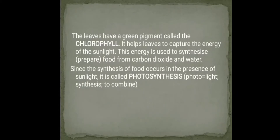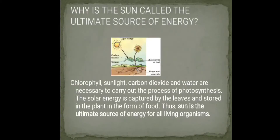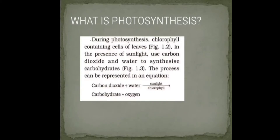This captured energy is used to synthesize food from carbon dioxide and water. Since the synthesis of food occurs in the presence of sunlight, it is called photosynthesis — 'photo' means light and 'synthesis' means to combine. The solar energy is captured in the leaves and stored in the plant in the form of food, making the Sun the ultimate source of energy for all living organisms.